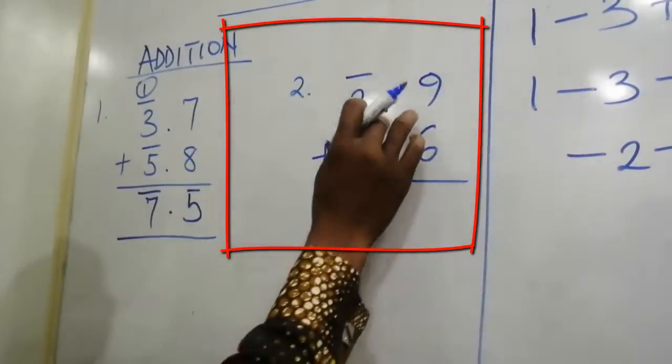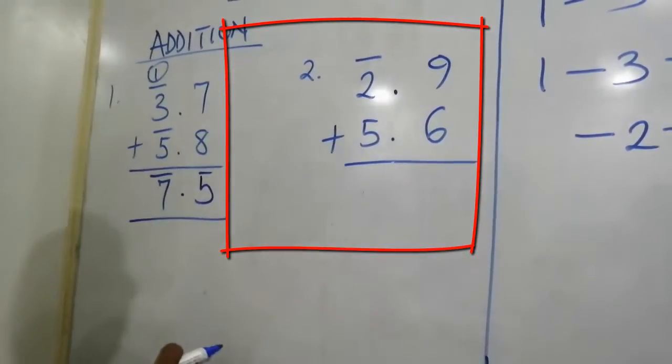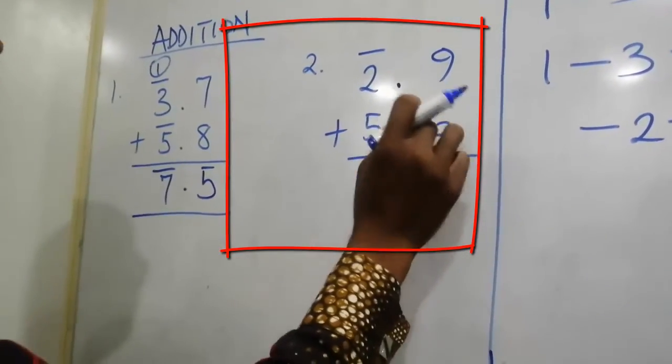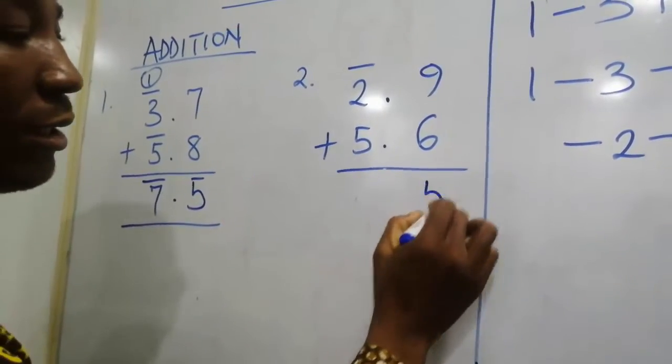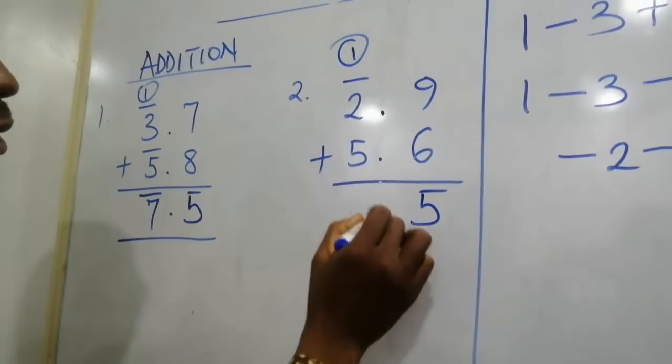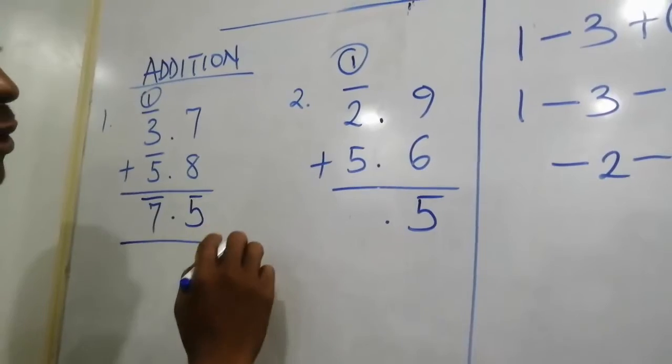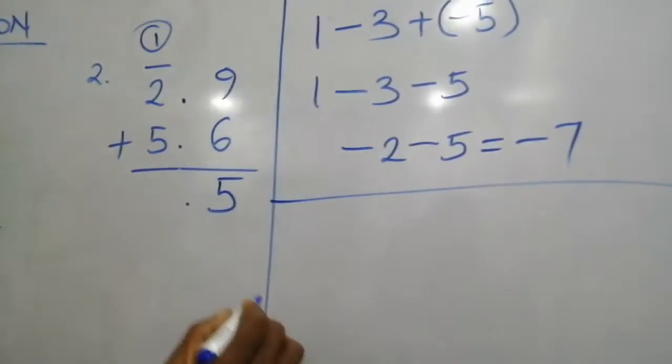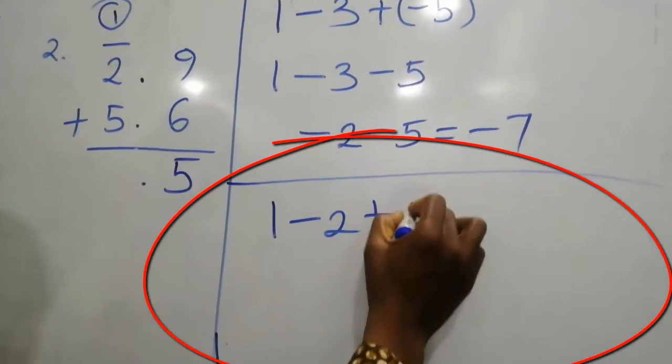Let's see the second example. Bar 2.9 plus 5.6. Add 6 to 9, that will give us 15. You are writing 5 and take the 1 here. Alright, 1 minus 2 plus 5. Can we do the rough work here too? 1 minus 2 plus 5.